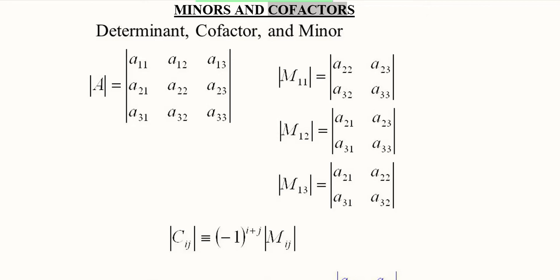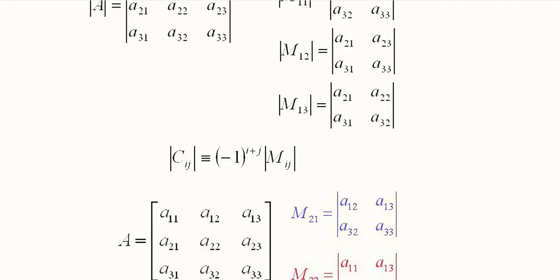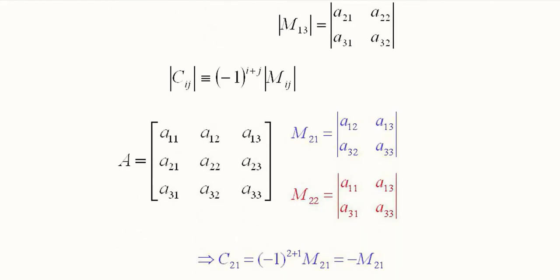We can easily find cofactors from these minors using the formula: the cofactor is identically equal to the product of two terms, where the second term is the minor and the first term is (-1) raised to the power of the sum of the row index i and column index j.